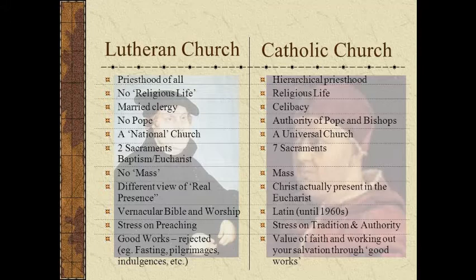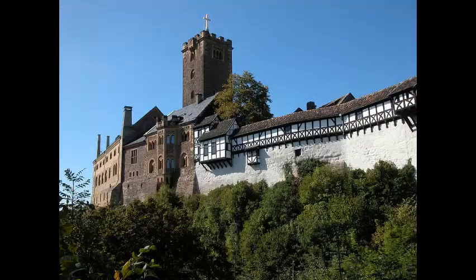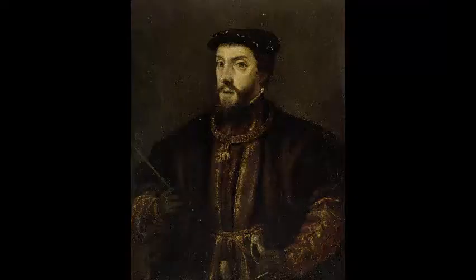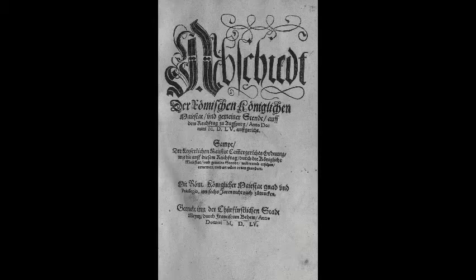Threatened with excommunication, Luther refused to recant, broke from the Catholic Church, and was banned by the Reich, only to be hidden in the Wartburg, a castle outside Eisenach in Thuringia, where he translated the New Testament into German. It was not until 1555 that the Catholic and Lutheran churches were ranked as equals, thanks to Emperor Karl V (r. 1520–58), who signed the Peace of Augsburg, allowing princes to decide the religion of their principality.